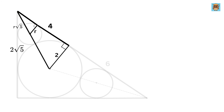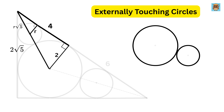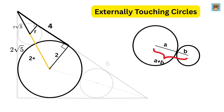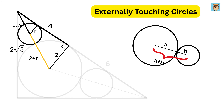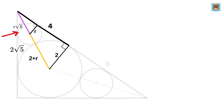A property of externally touching circles: when you connect their centers, the distance between the centers equals the sum of their radii. Therefore, this length equals the radius of the big circle (2) plus the radius of the smaller circle (r), and this equals r√5. Therefore, the length of the hypotenuse of the bigger triangle is r√5 + r + 2.